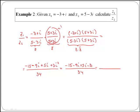If we join like terms on top, we have minus 18 minus 4i over 34.